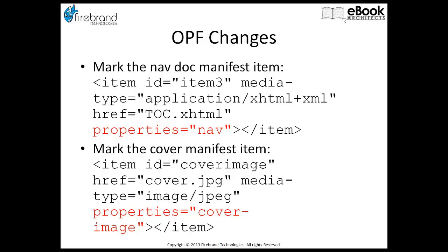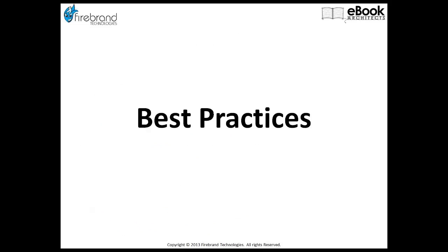That's the basics. Your basic process is fixing your XHTML headers, changing your table of contents into a navigation table of contents, and doing a couple of small changes in your OPF. There's really not a lot that you have to do to take a standard basic EPUB 2 document and turn it into something packaged as an EPUB 3. If you're doing novels, that's the majority of your changes right there.